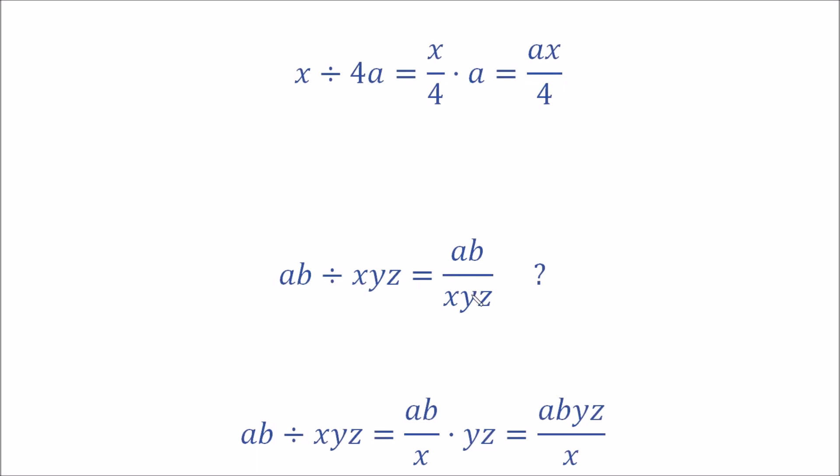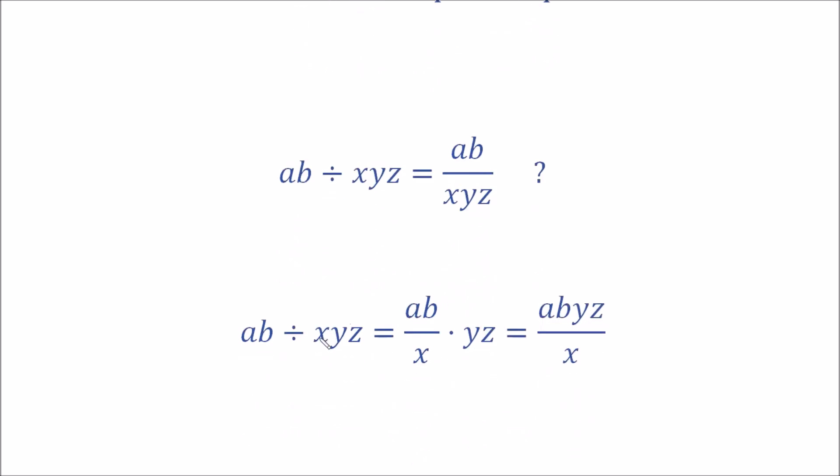But using the BODMAS/PEMDAS convention, we would go from left to right because these are all operations of the same precedence, and then you would do this division after you've done this multiplication here, and you'd end up with this term here which is abyz over x.